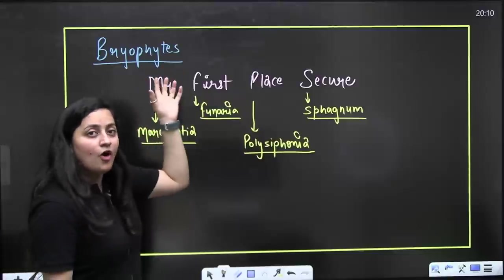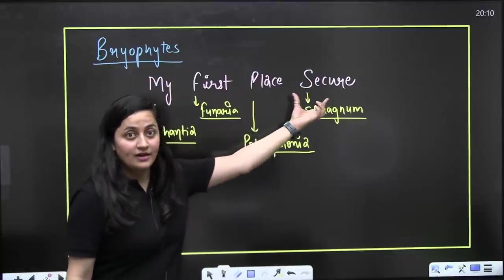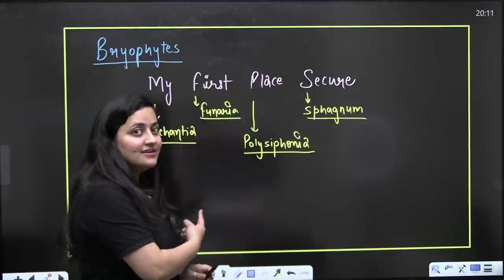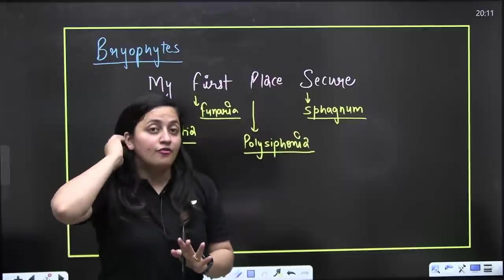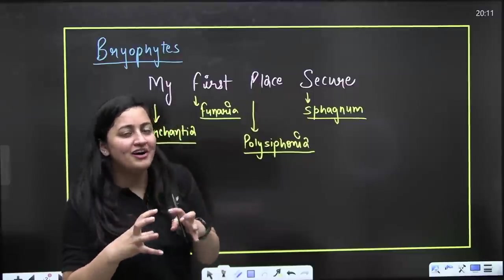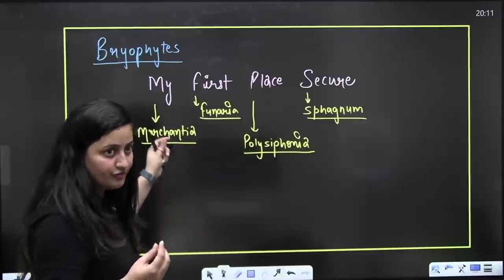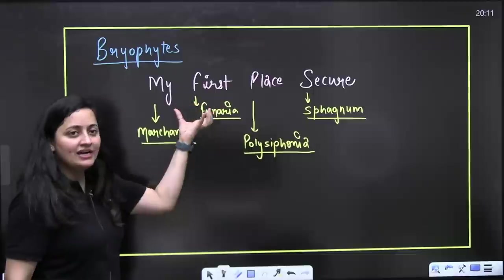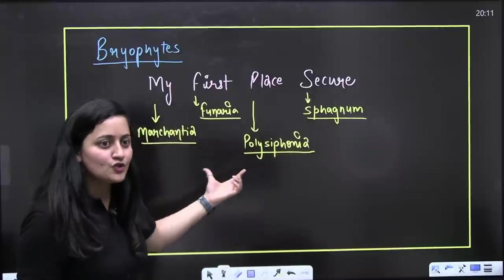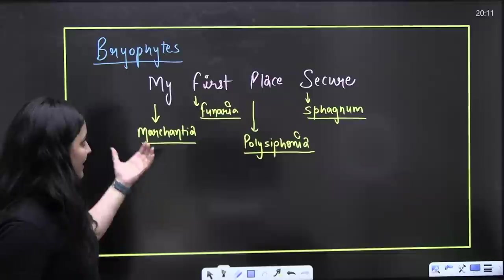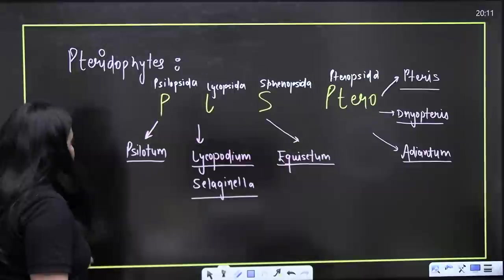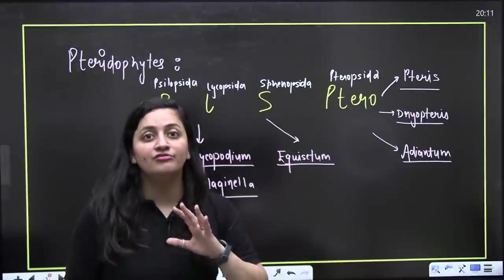Now for bryophytes, the trick is 'My First Place Secure.' The bryophyte life cycle is haplodiplontic; the dominant photosynthetic phase is the gametophyte, which is haploid. The sporophyte is present and multicellular, but partially or totally dependent on the gametophyte. M stands for Marchantia, F for Funaria, P for Polysiphonia, S for Sphagnum — also known as peat moss.